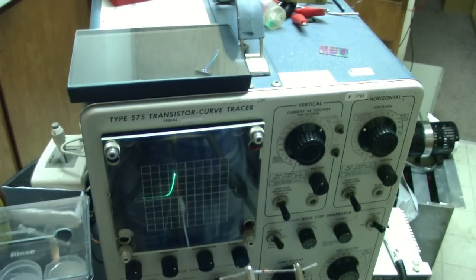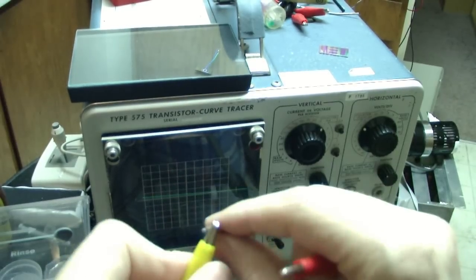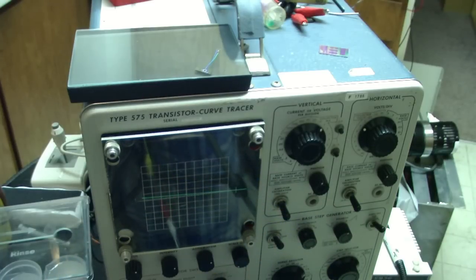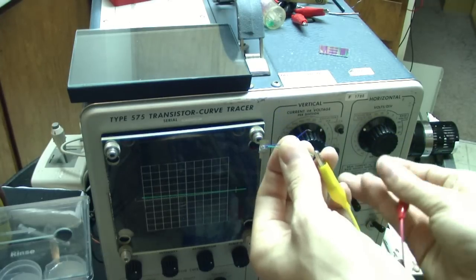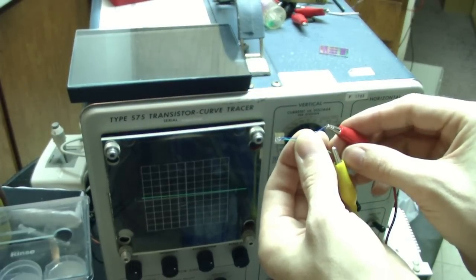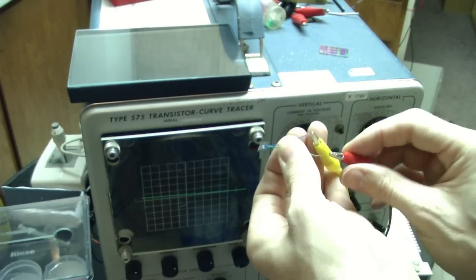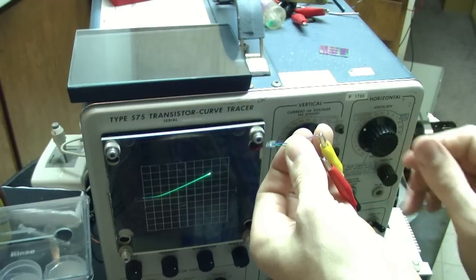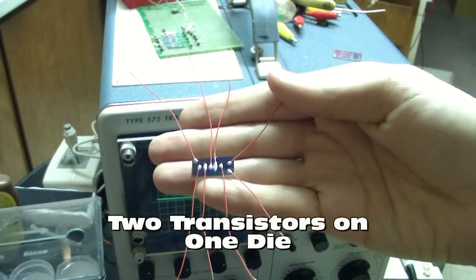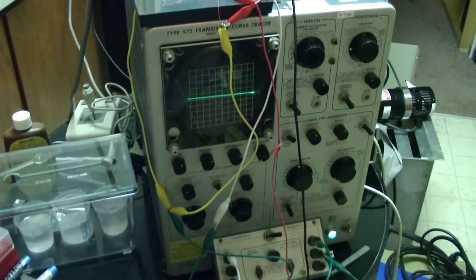This is the characteristic of a forward-biased silicon diode. I'll show you my diode that I built, forward and reverse biased. Okay. Reverse.